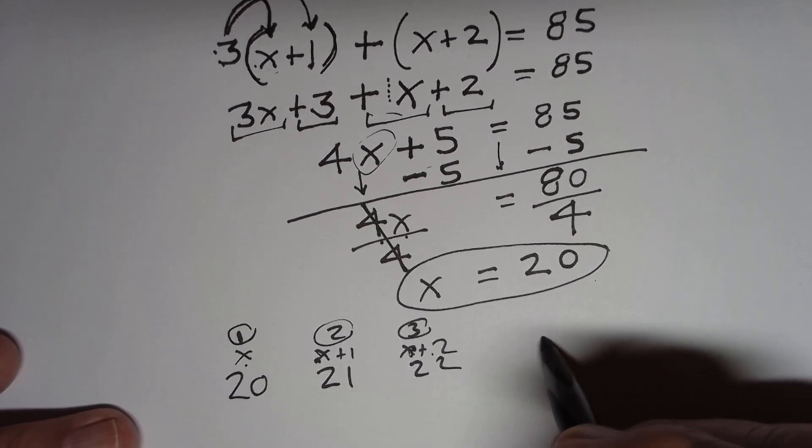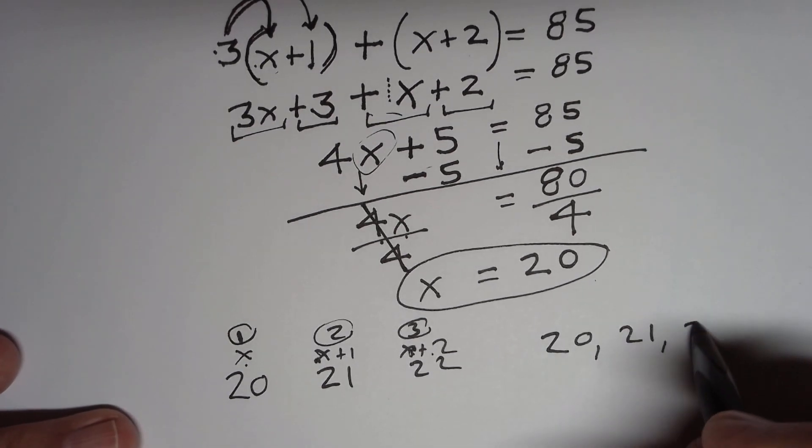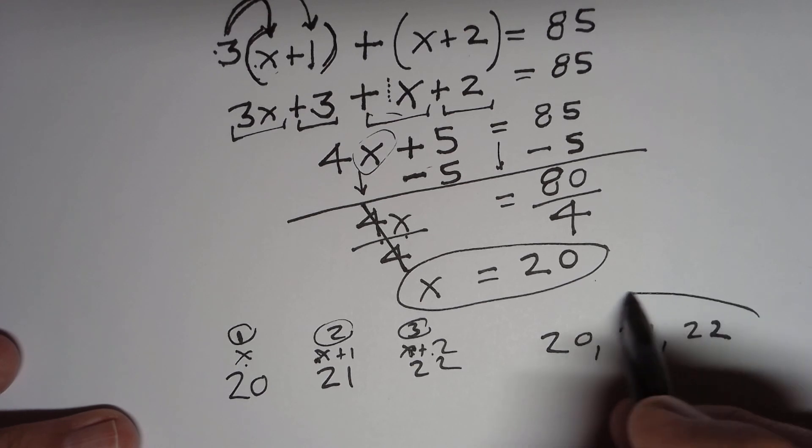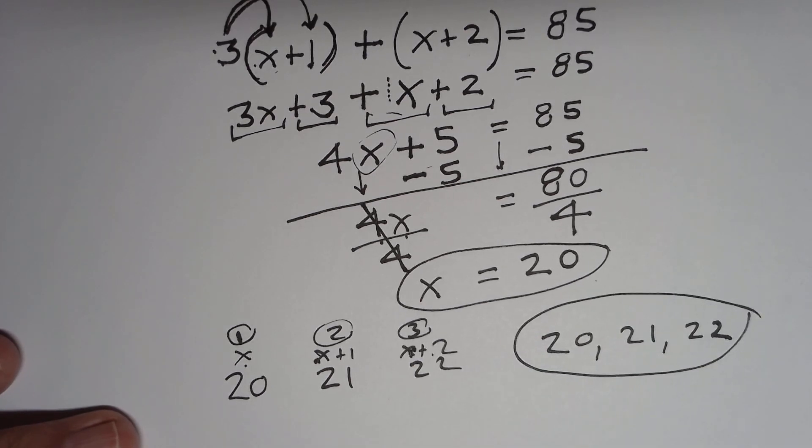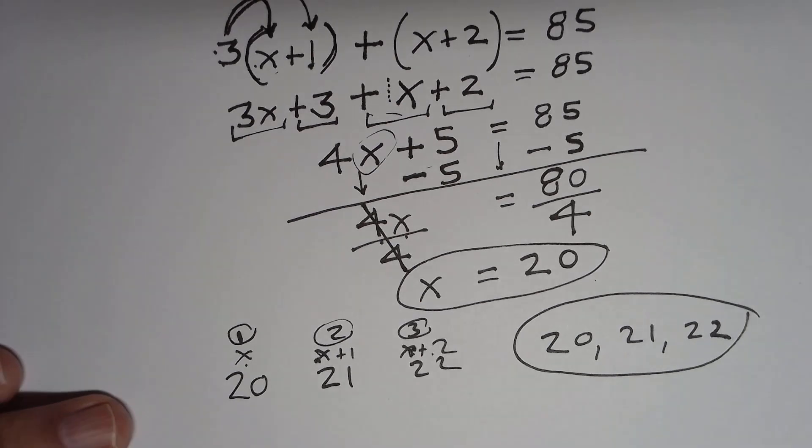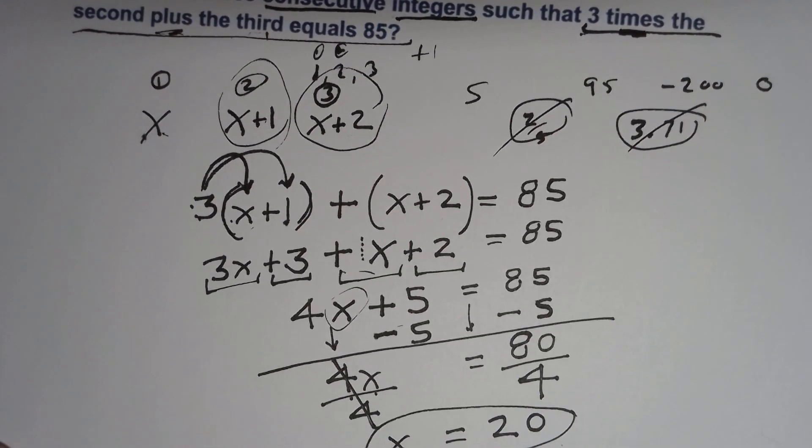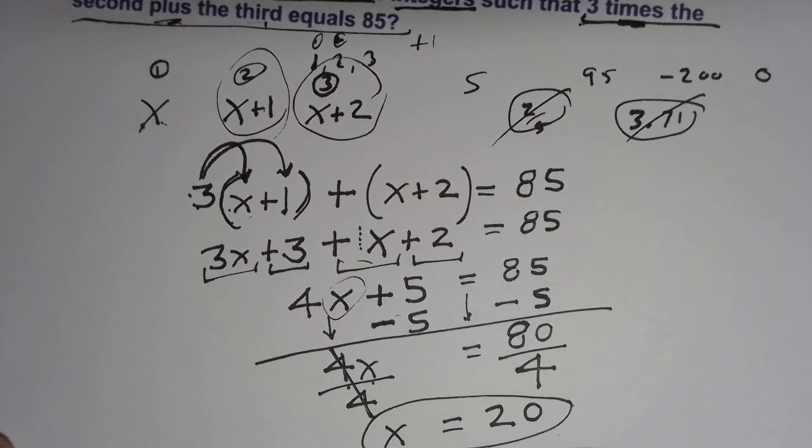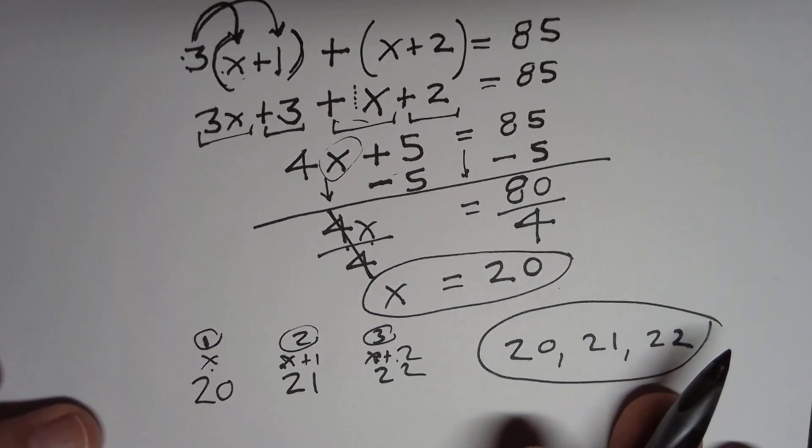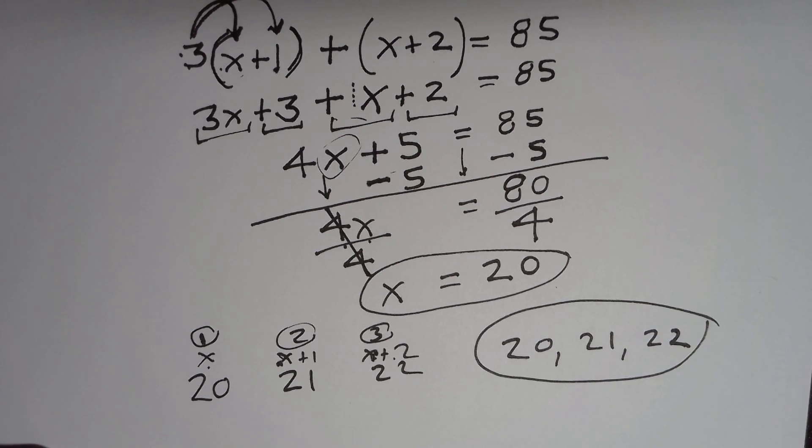So I have three consecutive integers, 20, 21, and 22. That is the three consecutive integers that three times the second plus the third is equal to 85. That's how you do it. That's how simply it is done. That's all I have for you in this video.